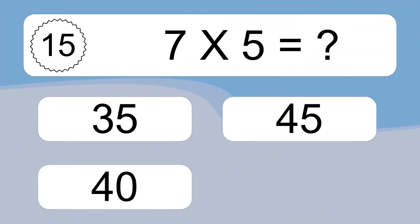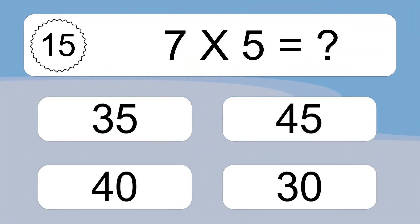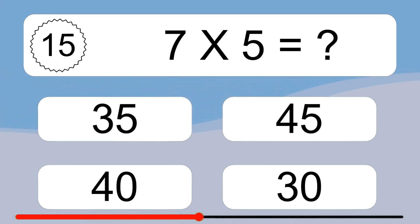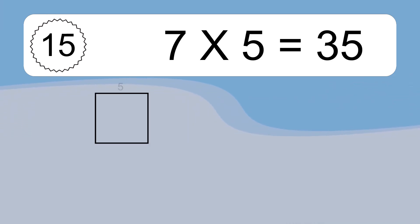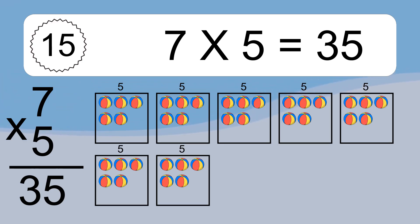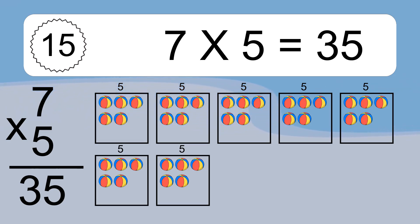7 times 5 equals what? 7 times 5 equals 35. We have 7 boxes, and each box has 5 colorful balls inside. If you count all the balls in all the boxes together, you will have 7 times 5 balls. This equals 35 balls.